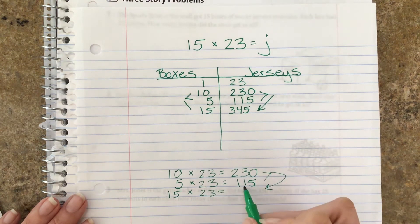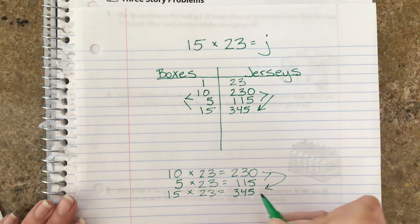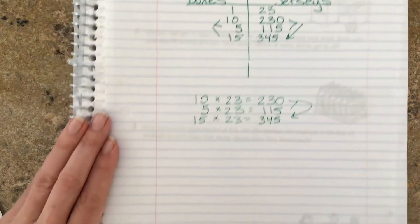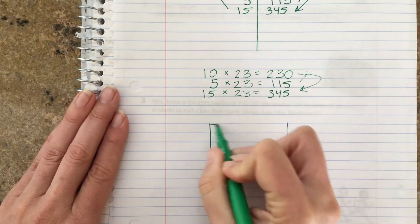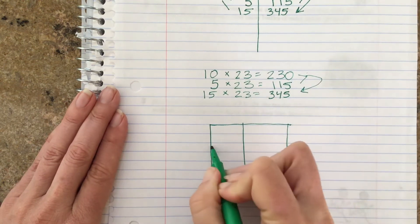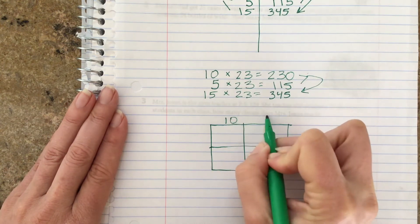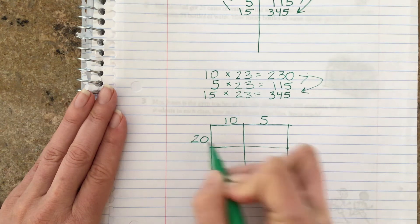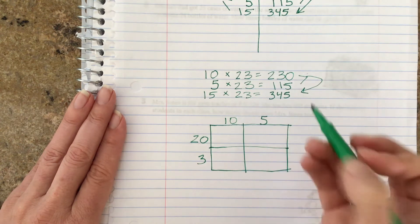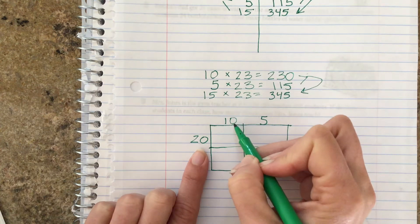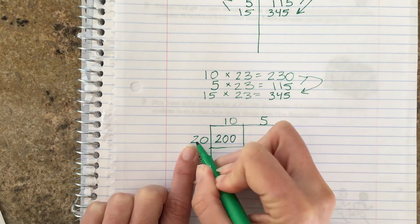And then you put those together, that's 15 times 23. You're going to put these two together to be your answer: 230 plus 115 is 345. Is that what you did, or did you do it this way with the box method? Maybe, just maybe, you took 15 into 10 and 5, you took 23 into 20 and 3, and you multiplied within each box.